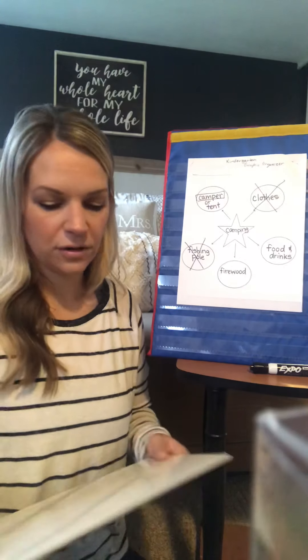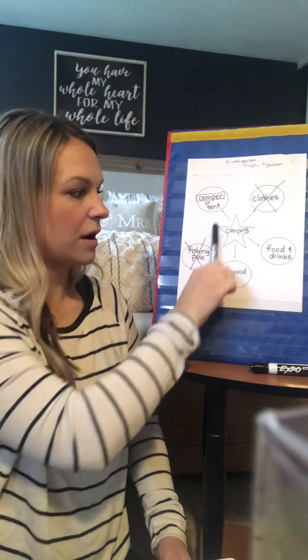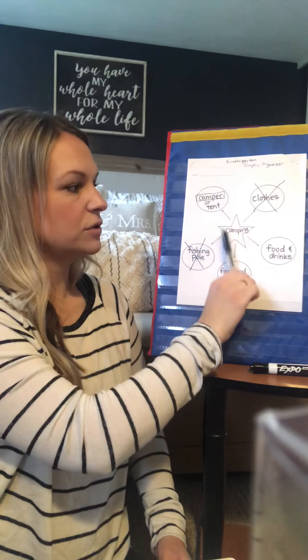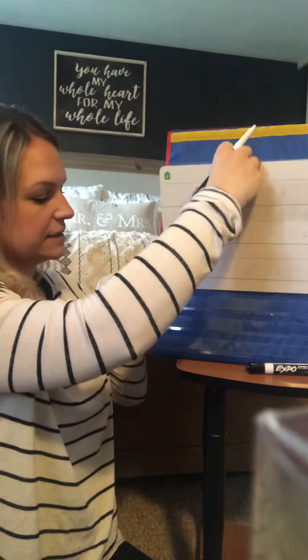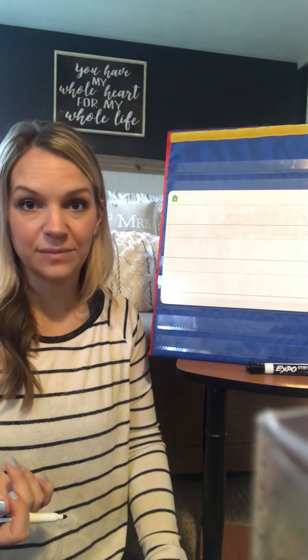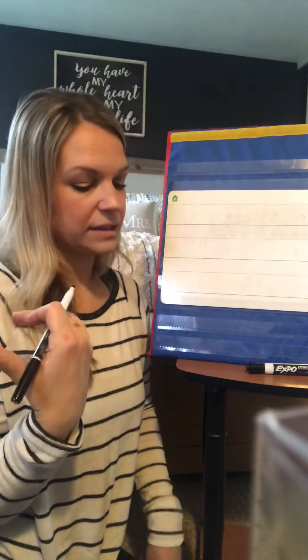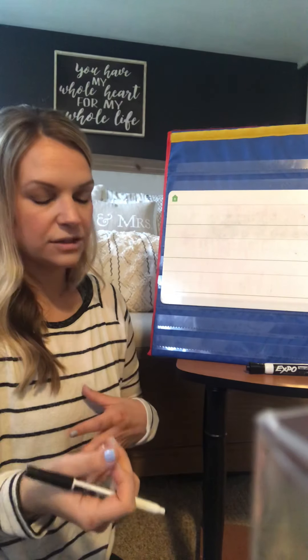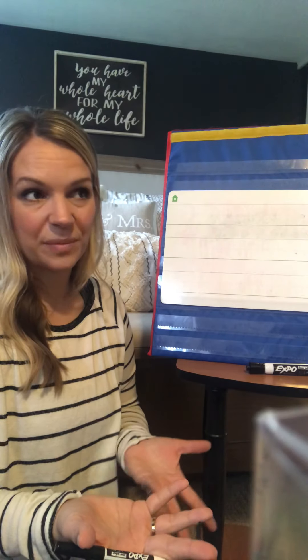So your first step for your writing is gonna be to write your topic sentence, and that is all about your topic — the thing you chose to tell people about. My topic is camping. Your topic sentence, like we've talked about before, just introduces your reader to what the story is going to be about. Mine is going to be about camping, so I am going to tell my readers the things that you need to go camping.